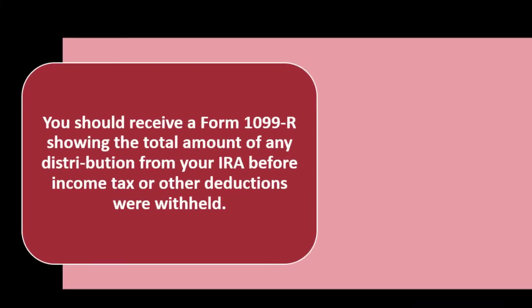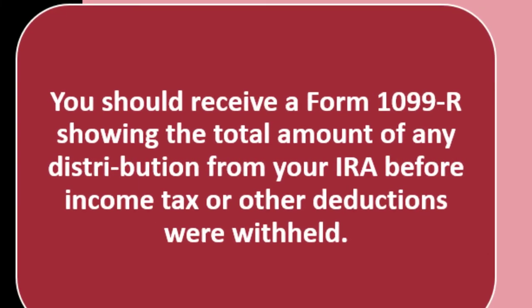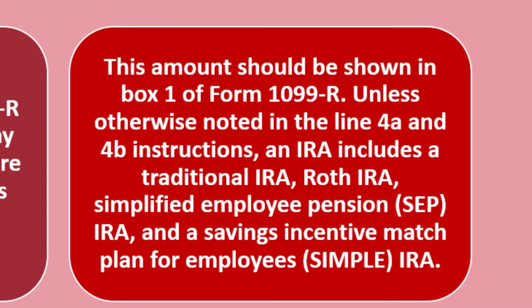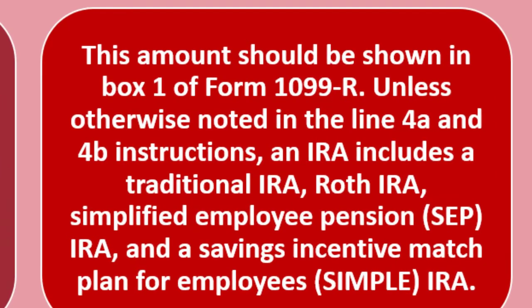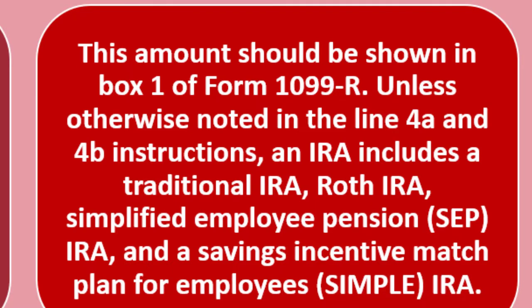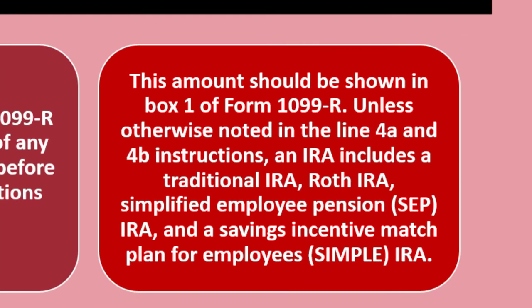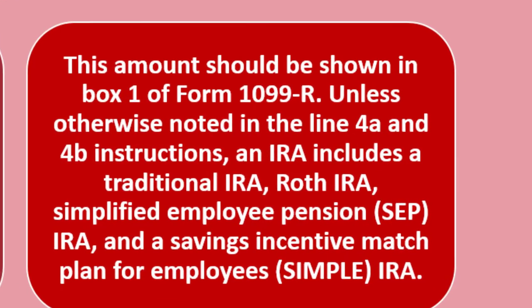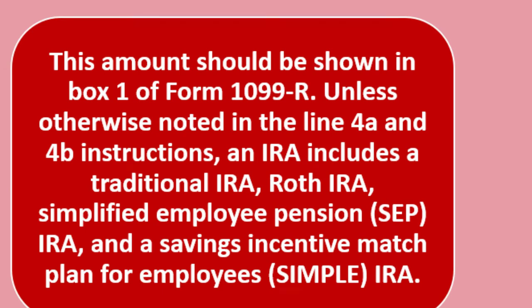For IRA distributions, you should receive a Form 1099-R, which is the distribution form. This form indicates the total amount of any distribution from your IRA before income tax or other deductions were withheld, shown in box one of Form 1099-R. An IRA includes a traditional IRA, Roth IRA, simplified employee pension (SEP IRA), and a savings incentive match plan for employees (SIMPLE IRA).